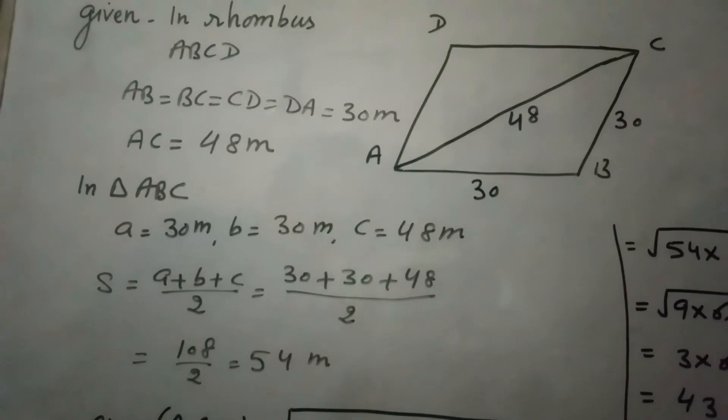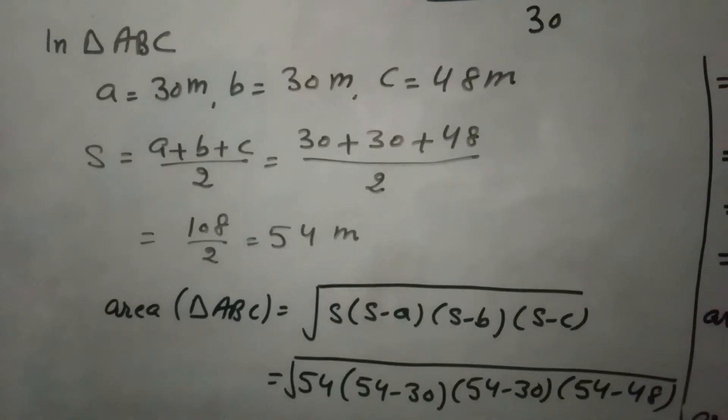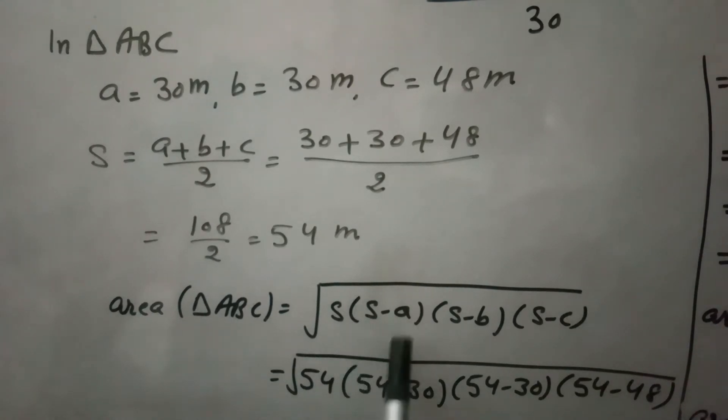According to Heron's formula, area of triangle ABC is square root of S times S minus a times S minus b times S minus c. S is 54, S minus a is 54 minus 30, S minus b is 54 minus 30, and S minus c equals 54 minus 48. So we have 54 minus 30 is 14, here also 14, and the difference is 6.